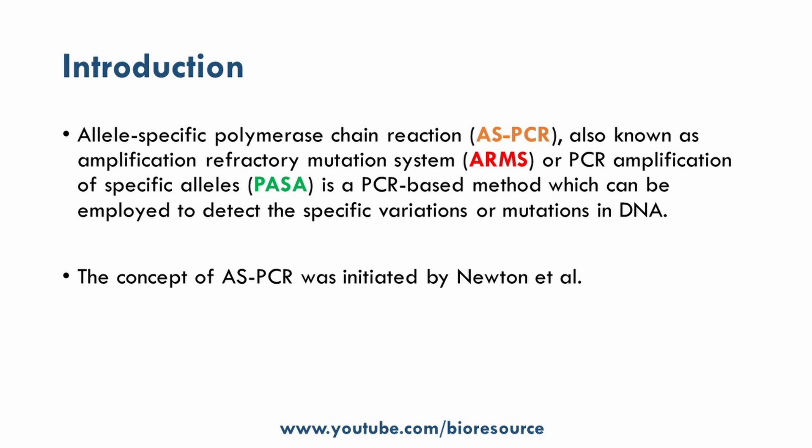In the case of allele specific PCR, the primers are designed to specifically recognize and amplify a particular allele or a variation of the gene. For example, if a gene has two known alleles — one normal and one mutated — two sets of primers can be designed, one for each allele. The reaction is then performed, and the specific amplification of one allele over the other can indicate the presence of the corresponding mutation.